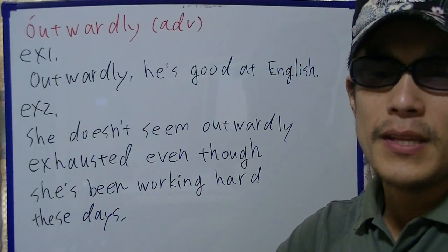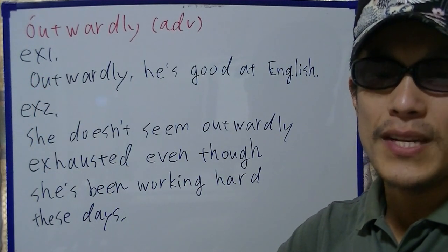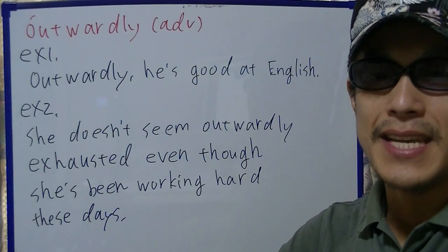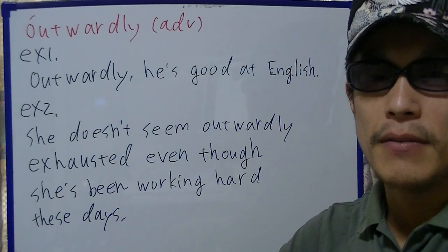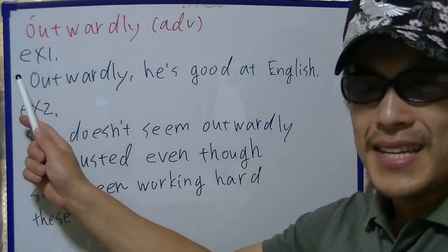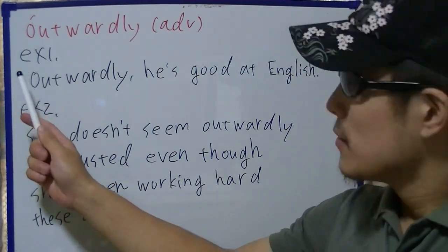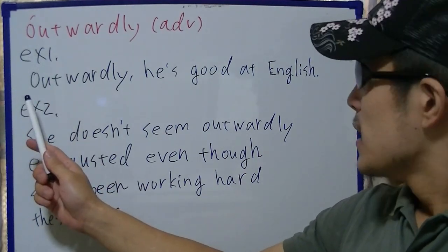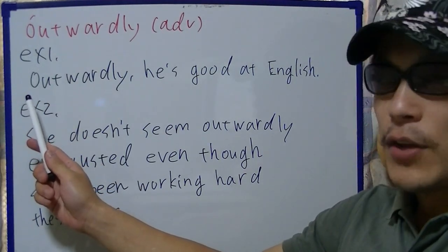As usual, without more ado, let's get started and move on to some examples right away. Example 1: Outwardly, he's good at English.